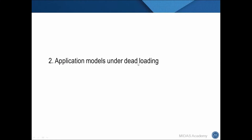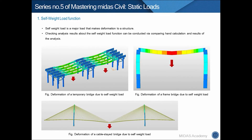We have seen various functions in the static load function group in the previous slides and demonstration. Now we will look at application models with dead loading. The first application is self-weight. Self-weight load can be used for various structure models — the major reaction shows deformation in the direction of gravity.